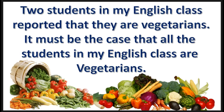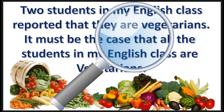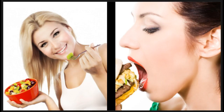Next practice problem: What type of fallacy is in this argument? Press pause — the answer will appear in 3, 2, 1. This is an informal fallacy. To detect the fallacy, we must know information about the content. We must know vegetarians and meat eaters are generally equally divided, and also that English classes have many students.